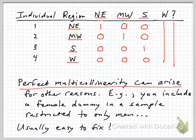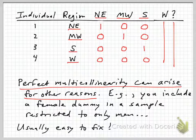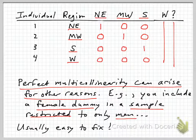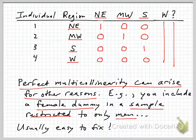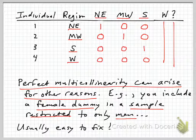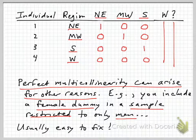Perfect multicollinearity can arise for other reasons too. One thing that can happen — and it might not be obvious — would be: suppose you include just a female dummy without including a male, so you're not falling into the dummy variable trap, but you've got a sample restricted to only males. Everybody in that sample takes a value of zero on the female dummy variable. That also leads to perfect multicollinearity, because in multiple regression the constant term is included as a column of ones, and those zeros on the female dummy are perfectly collinear with that column of ones. Consequently, that regression will fail to estimate a female effect because there's no contrast to look at.